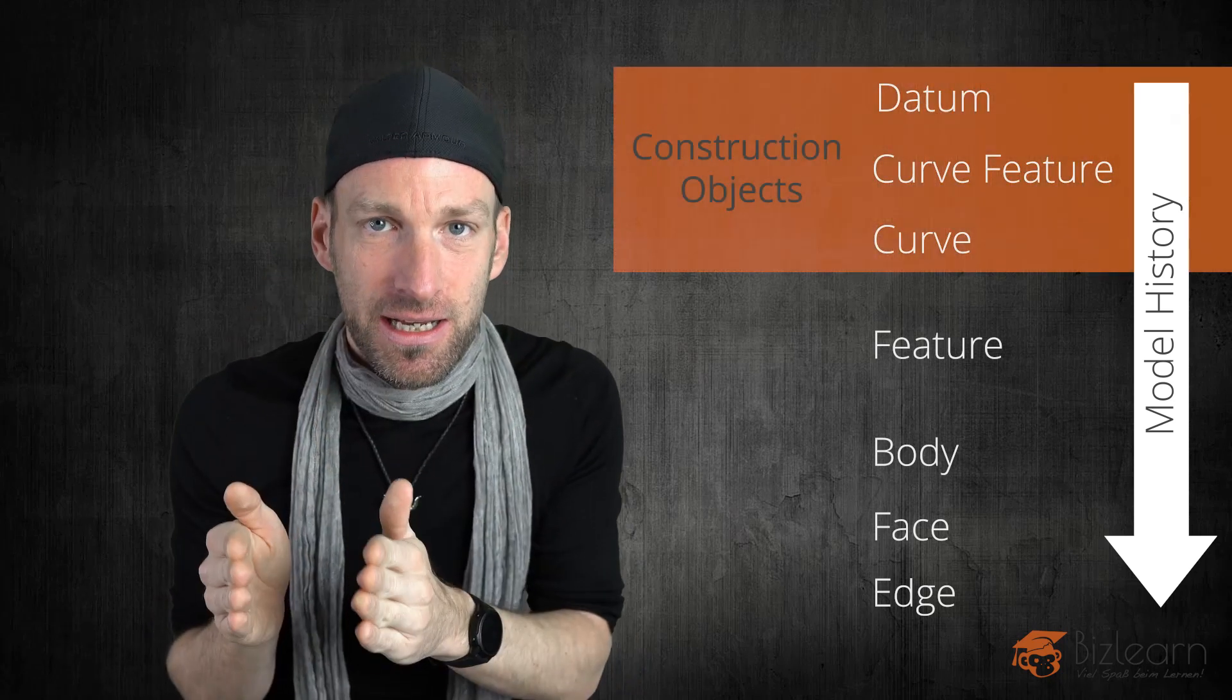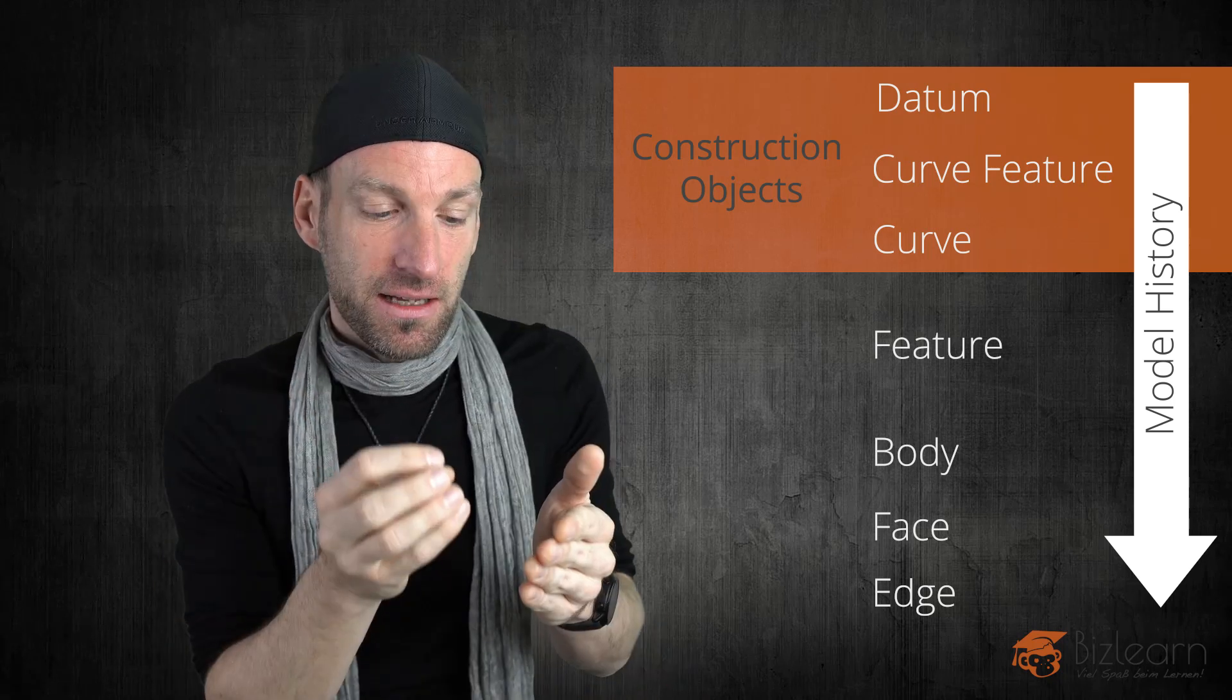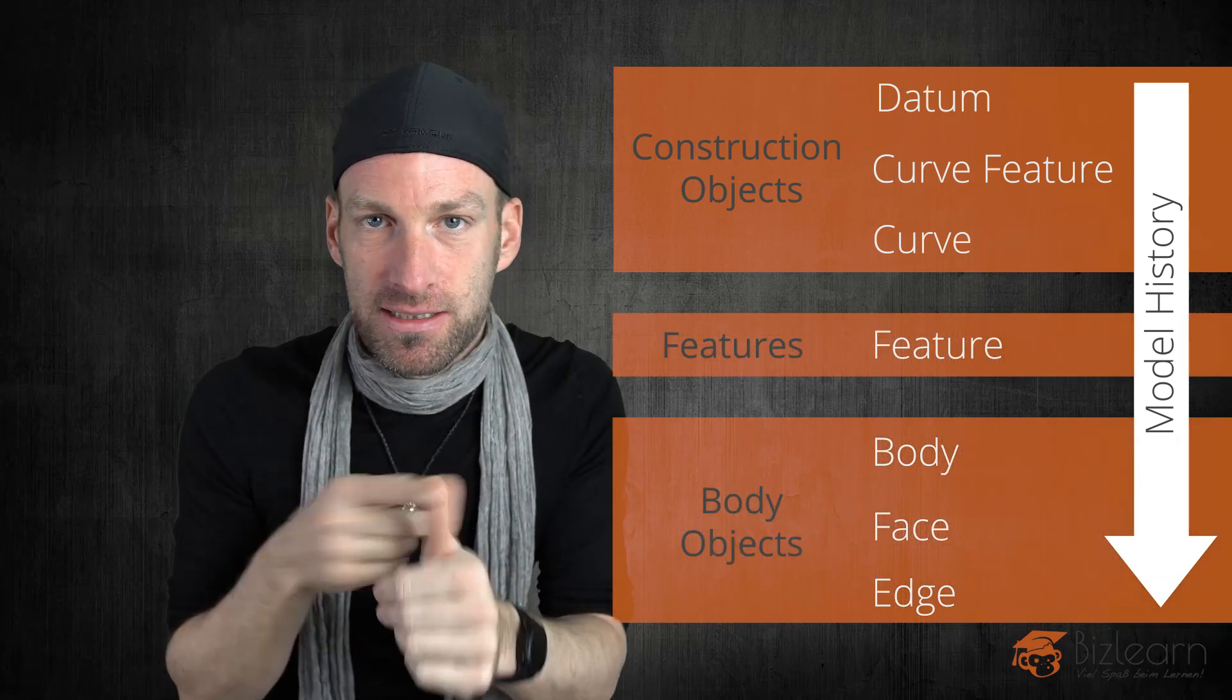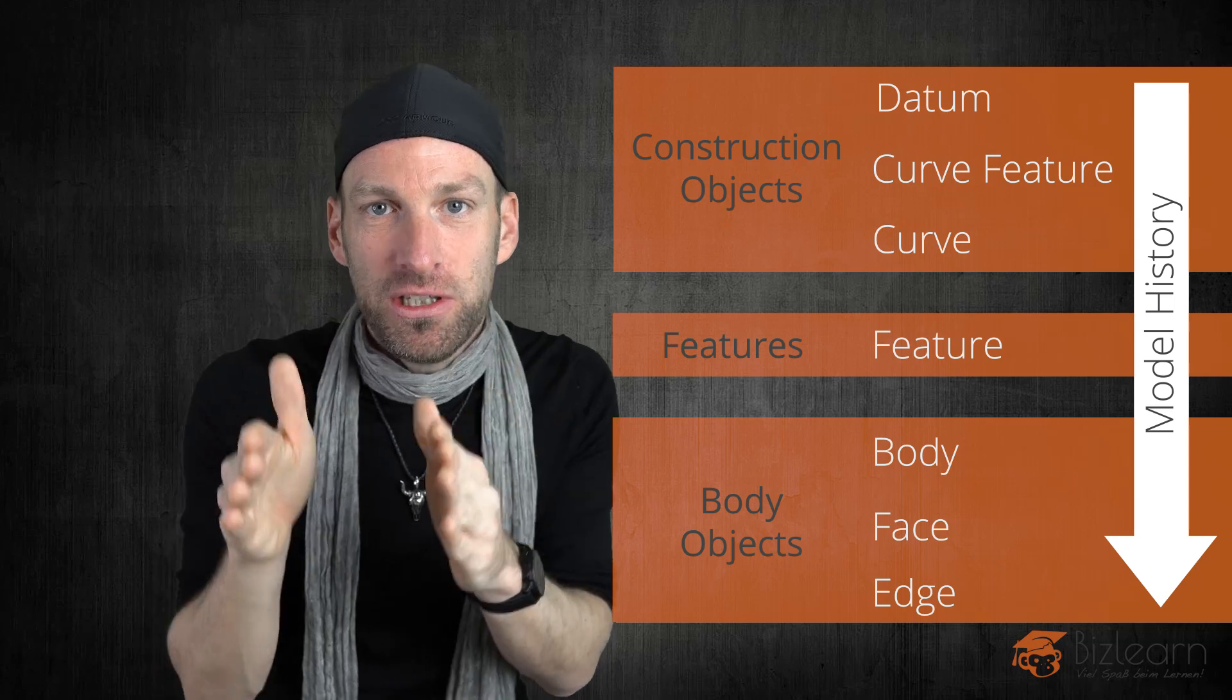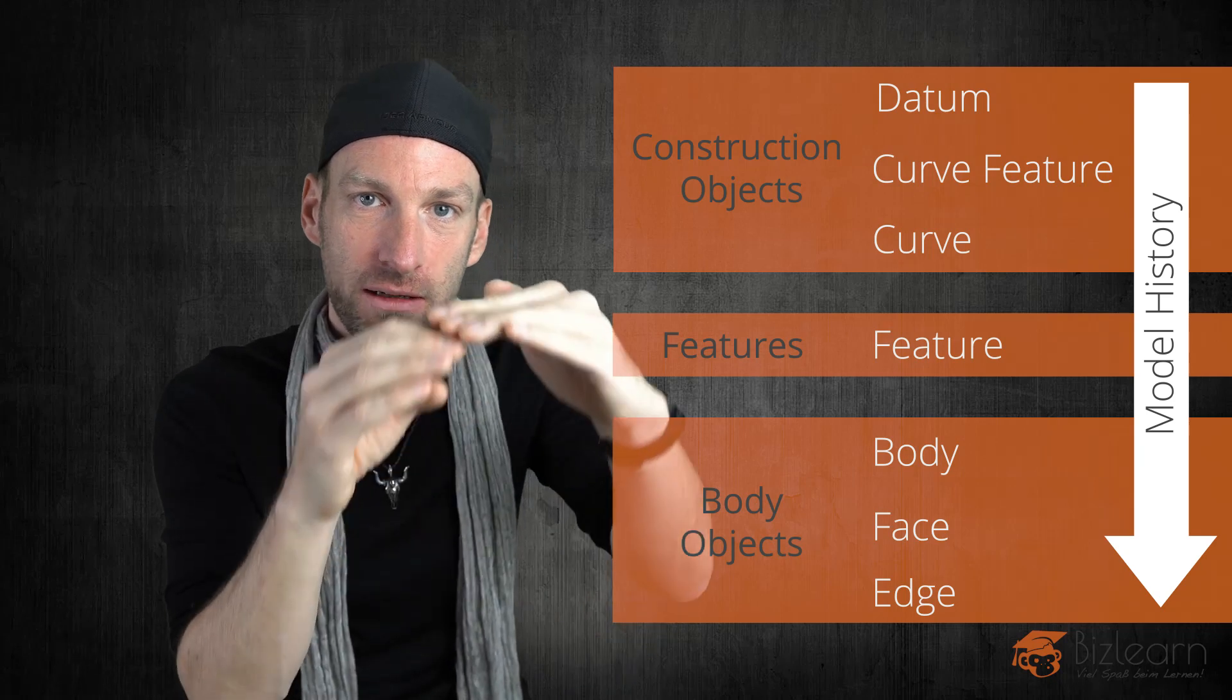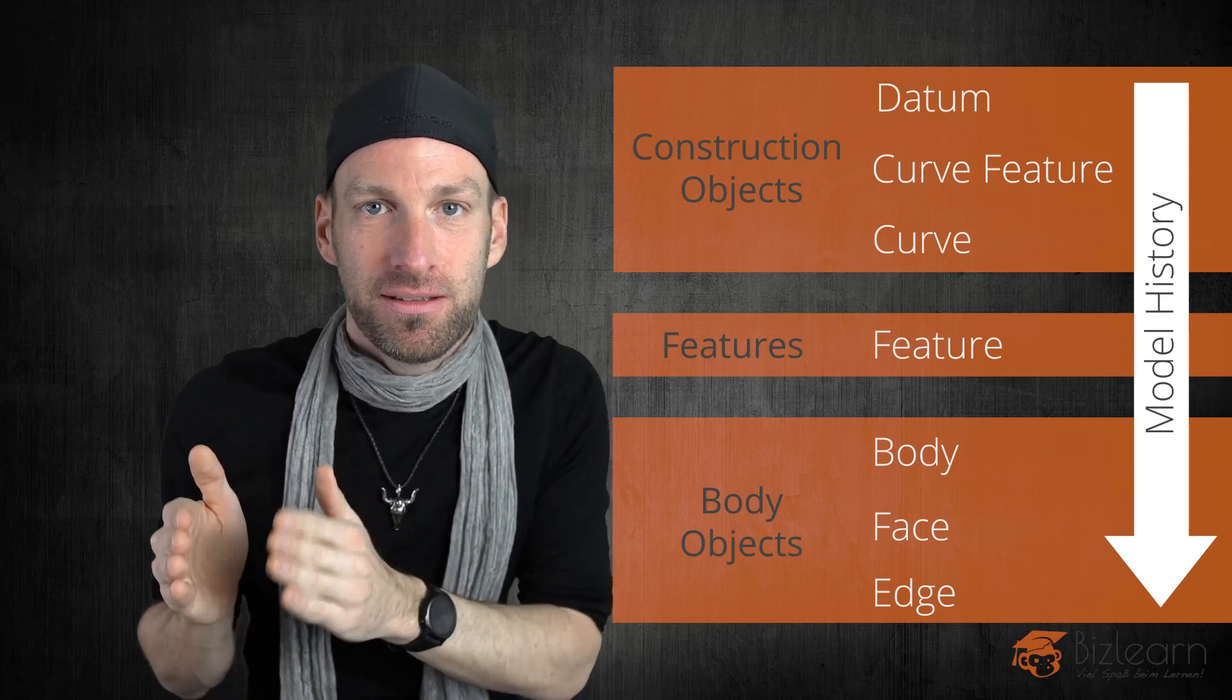What comes next? Construction objects. Datums. Construction objects are coordinate systems, datums, sketches, and curves. Those follow next. And after construction objects, you will see the body objects. Meaning solid body, sheet body, faces, and edges. Those are the newest objects. And somehow you will see the similarity between horizontal modeling between the selection of old objects and what is a new object and what Siemens NX or how Siemens NX is processing those things by using selection rules.